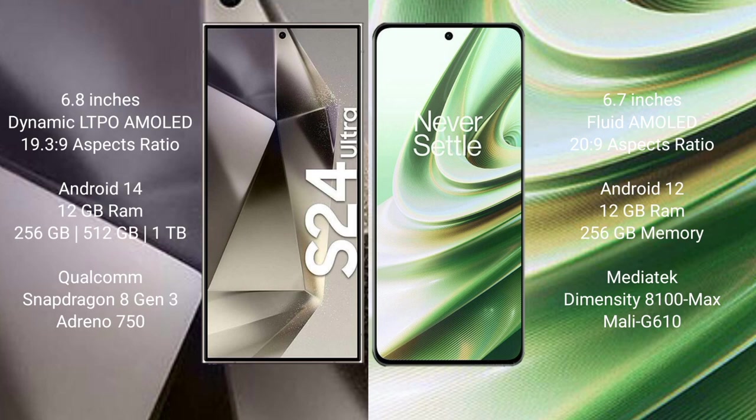Samsung Galaxy S24 Ultra comes with 12GB RAM and 256GB, 512GB, or 1TB internal storage, Qualcomm Snapdragon 8 Gen 3 processor and GPU Adreno 750. OnePlus 10R comes with 12GB RAM and 256GB internal storage, MediaTek Dimensity 8100 Max processor and GPU Mali-G610.